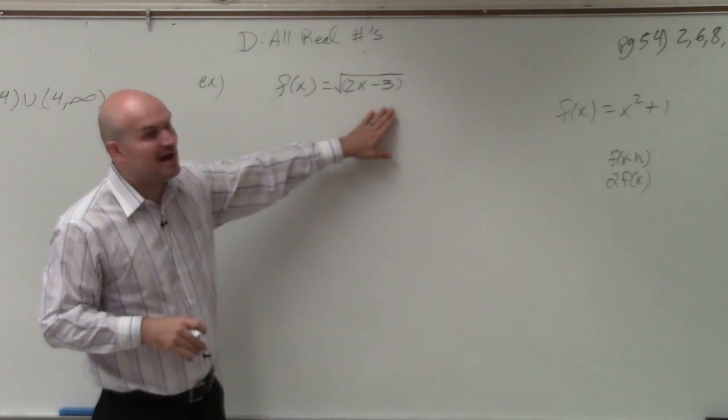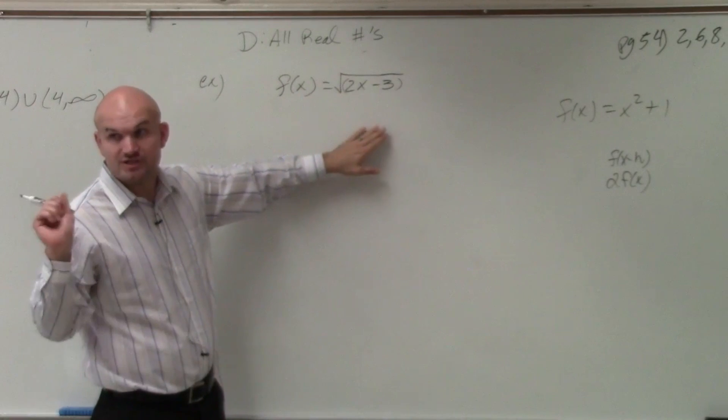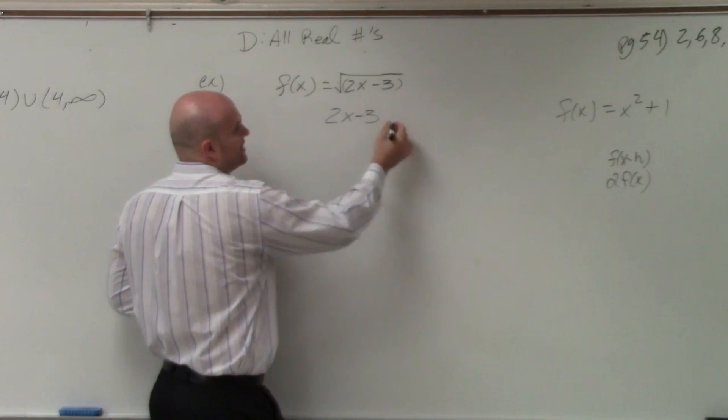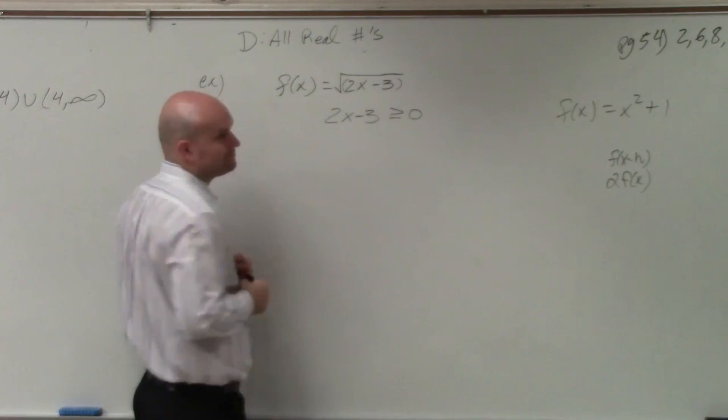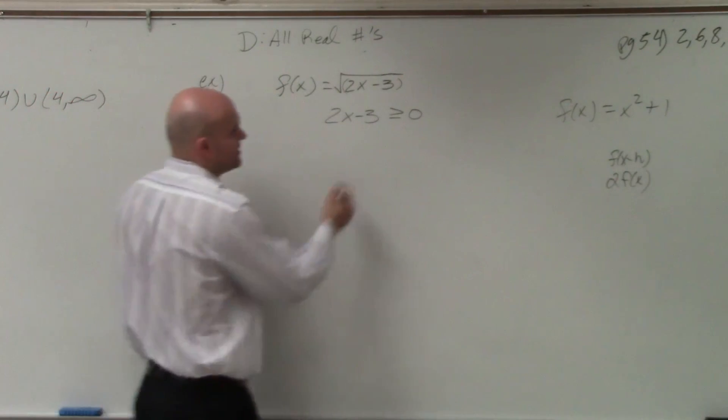So I do have a restriction on its domain. It's not given to us, but it's a restriction that we've talked about. So therefore, my restriction, I have 2x minus 3 has to be greater than or equal to 0. So now, to find my domain, I just solve for x.